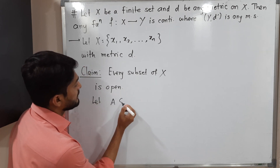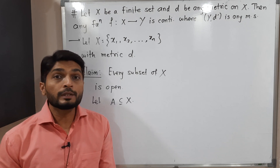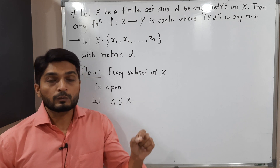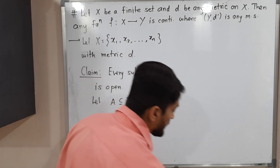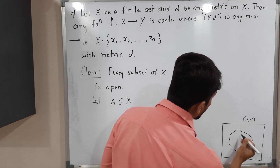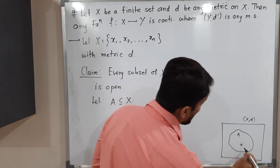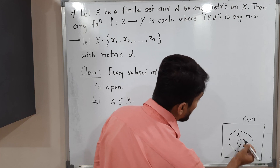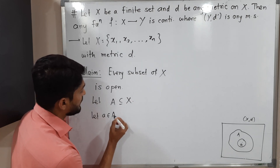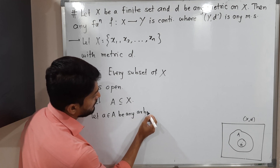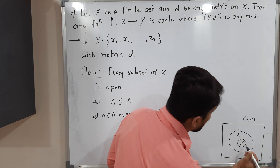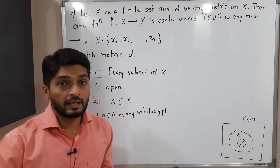Let A be a subset of X. We have to prove it is open. To prove any set is open, we take any arbitrary point from the set and try to find a ball around it which entirely lies inside set A. So let a be an arbitrary point with a ∈ A. Our target is to find a radius R such that the ball with center a and radius R entirely lies inside set A.